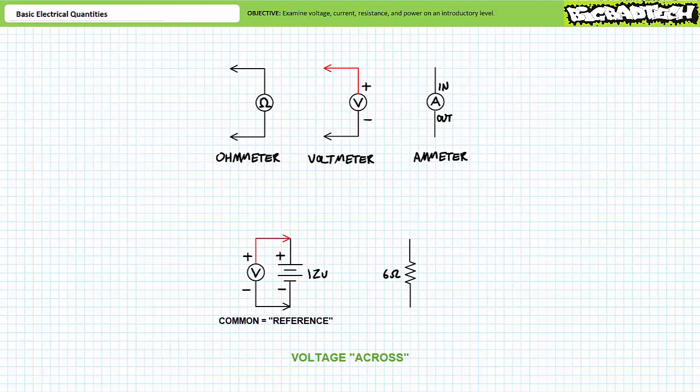If however, one place the reference lead on the positive terminal and measure the negative with reference to the positive, the voltmeter would indicate the negative lead is 12 volts lower than the positive terminal and display negative 12 volts.